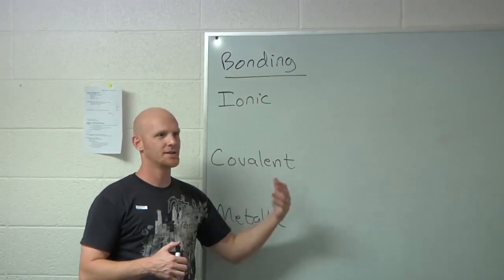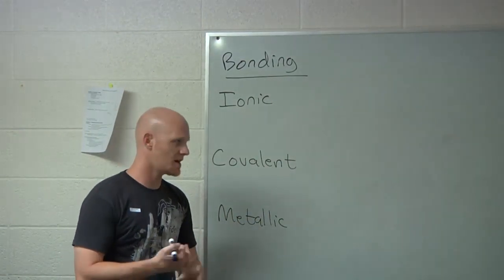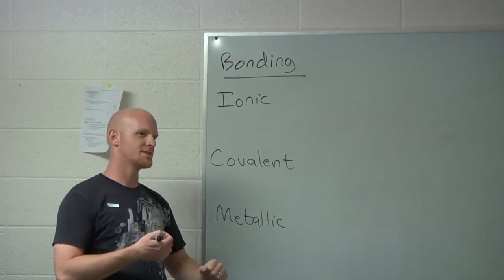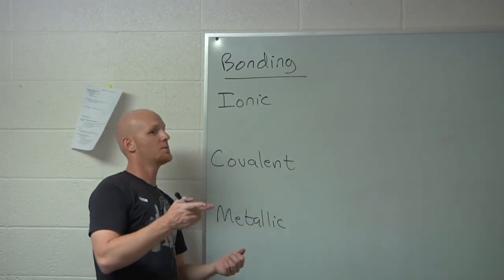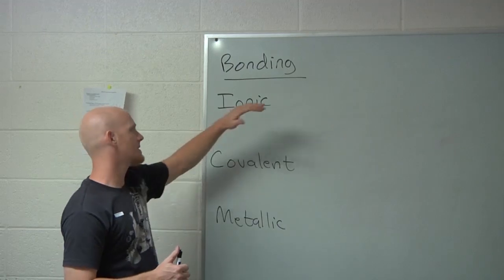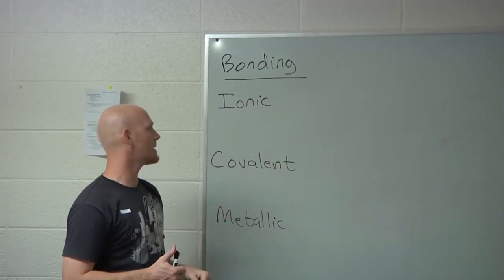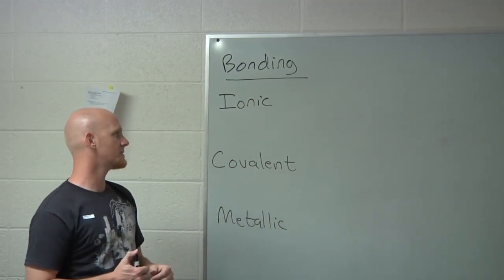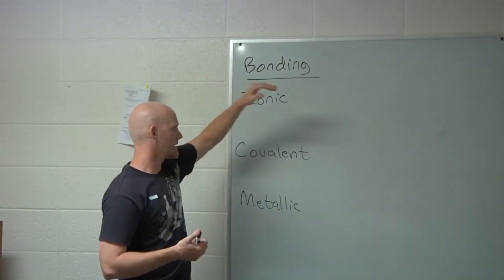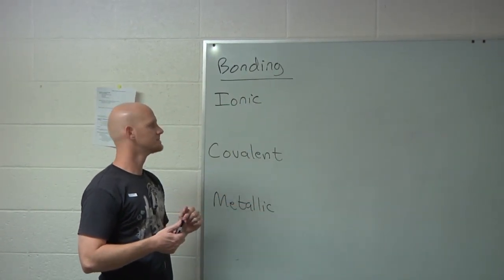So your next chapter, you're really going to get into all the different structures and Lewis dot structures, and we'll tie that into the next chapter with all the different geometries. We'll probably get just a little bit ahead of where you are in lecture, but before we talk about that, we really need to talk generally about the three different types of bonding: ionic bonding, covalent bonding, and metallic bonding.